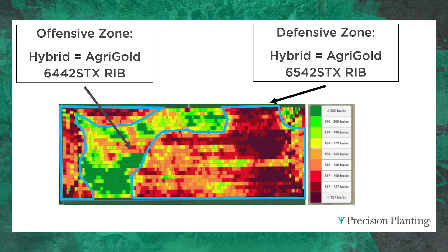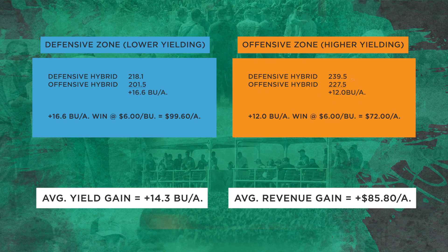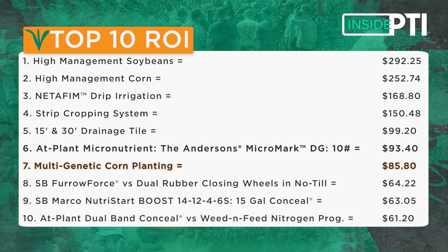Now look at the good ground — the green on the screen. This is where we go in and put a top gun, an offensive corn hybrid, to really take advantage of those good soils and go all out for yield. This is not where you want a defensive hybrid — this is where you'd lose yield potential. We picked up 12 bushels on this scenario. At $6 corn, that's a $72 winner. So we did pretty well in 2022 on average — a 14.3 bushel corn yield gain and an $85 winner per acre. It actually made our top 10, coming in at number seven on our top 10 list of winners at $85.80 an acre.